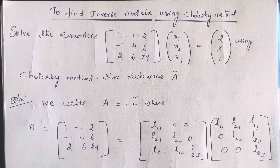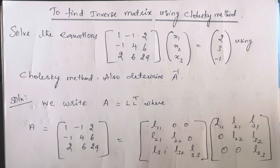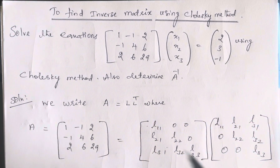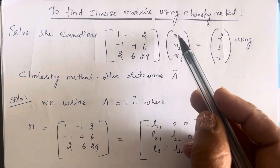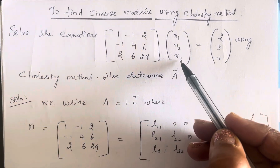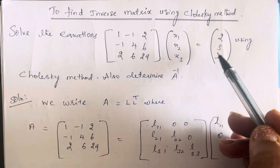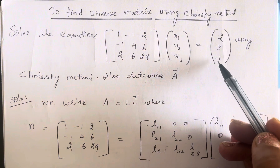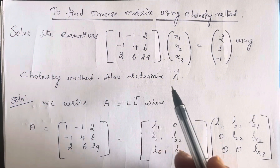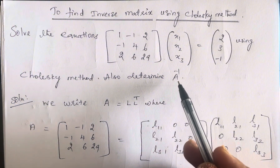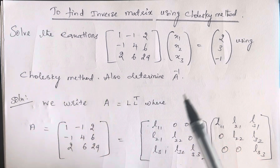Solve the equations with matrix A = [[1, -1, 2], [-1, 4, 6], [2, 6, 29]], where [x1, x2, x3] is equal to [2, 3, -1]. Using the Cholesky method, also determine A inverse.